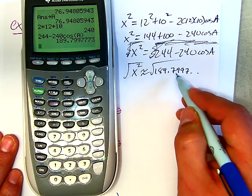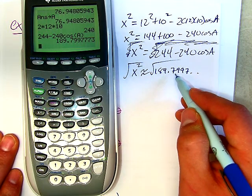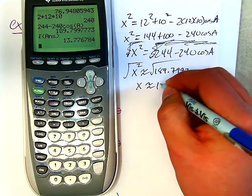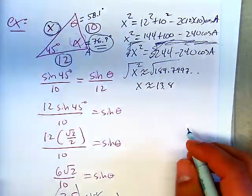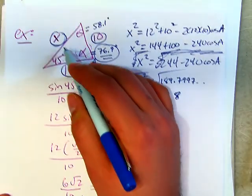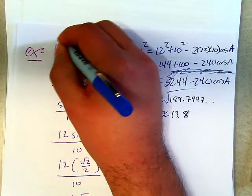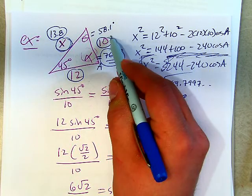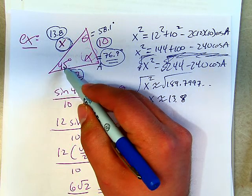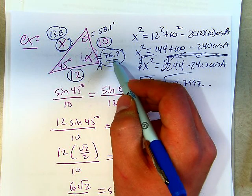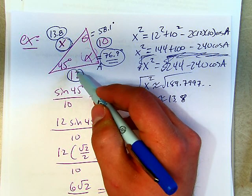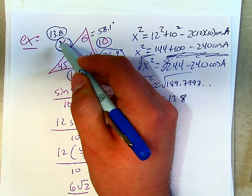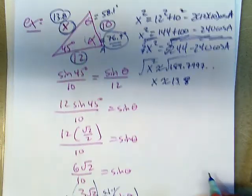So now, if I go back to the triangle, let's see if everything matches up. Smallest side is 10, which is across smallest angle, which is 45. The middle angle, which is 58.1, is across 12, which is the middle side. Largest angle, 76.9, is across the largest side, which is 13.8. So this is case one.